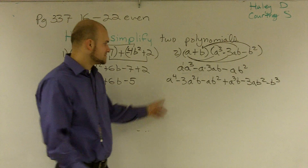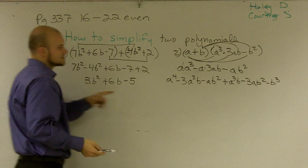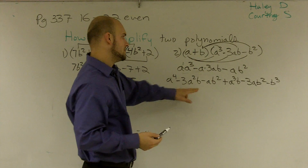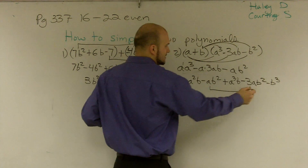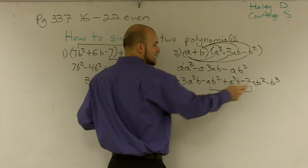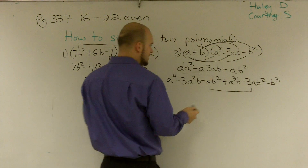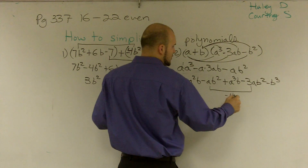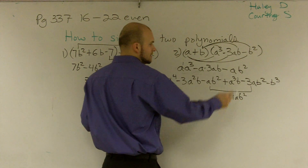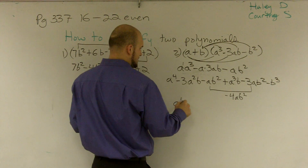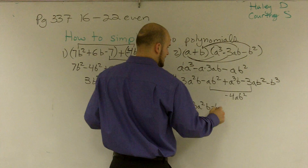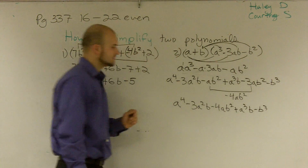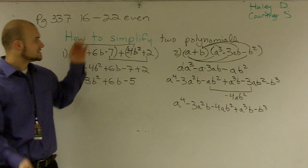Now I need to look at whether I have any like terms I can combine. Is there any other number with an a to the fourth? No. Is there any other term with an a squared and a b? No. Is there any other term with a b squared and an a? Yes — negative ab squared and negative 3ab squared both have a to the first and b squared, so that gives negative 4ab squared. So I rewrite my whole answer: a to the fourth, minus 3a squared b, minus 4ab squared, plus a cubed b, minus b cubed. And that will be my final answer — that's how you simplify two polynomials.